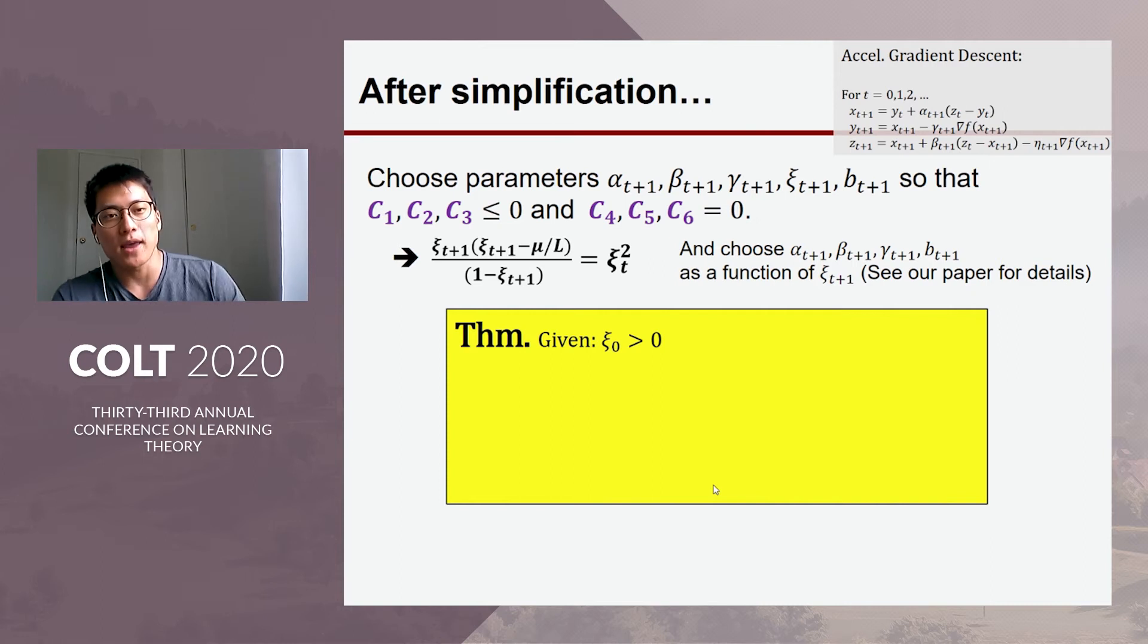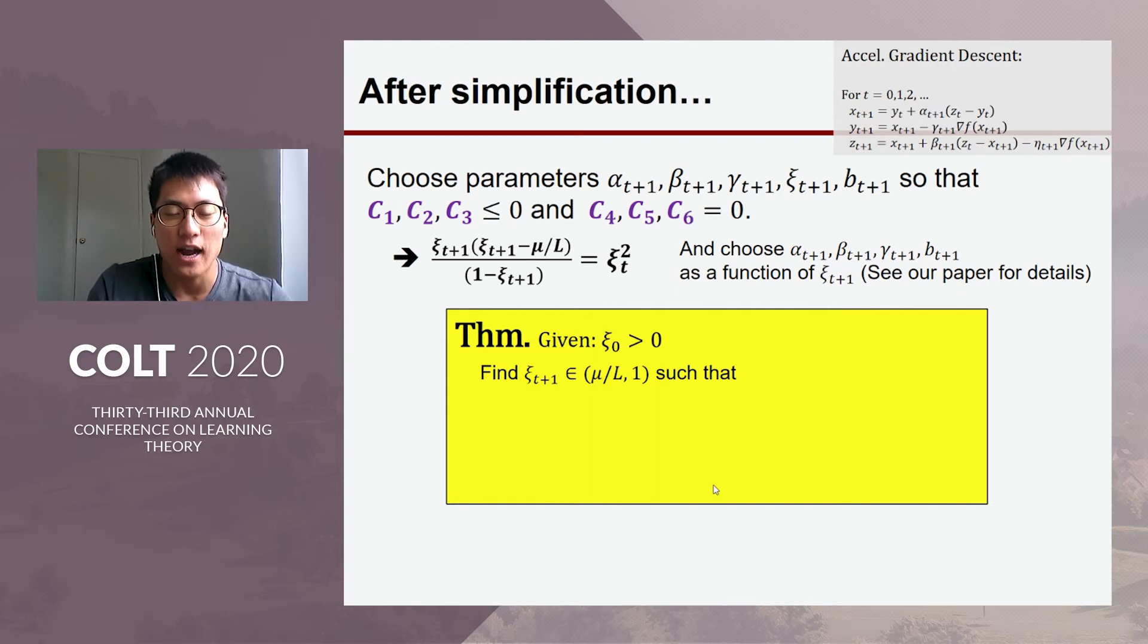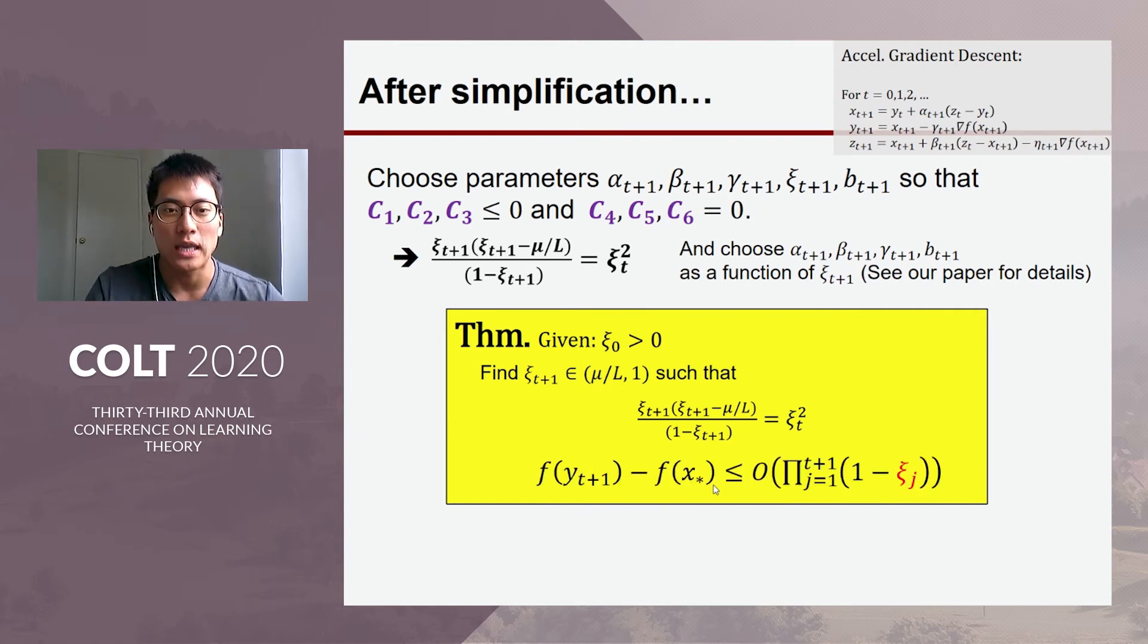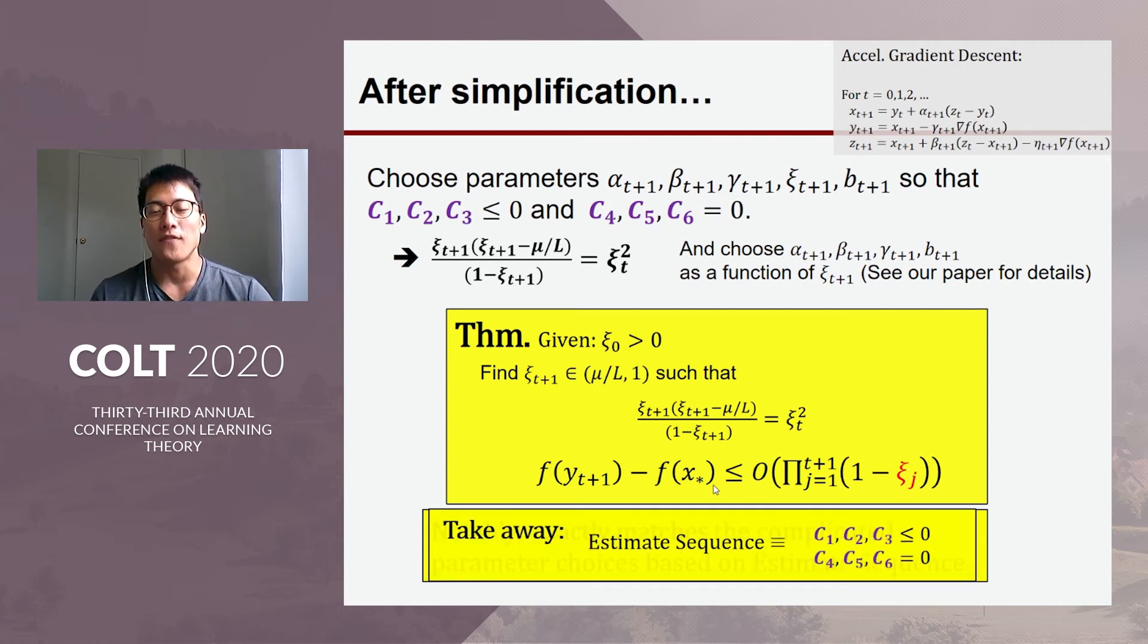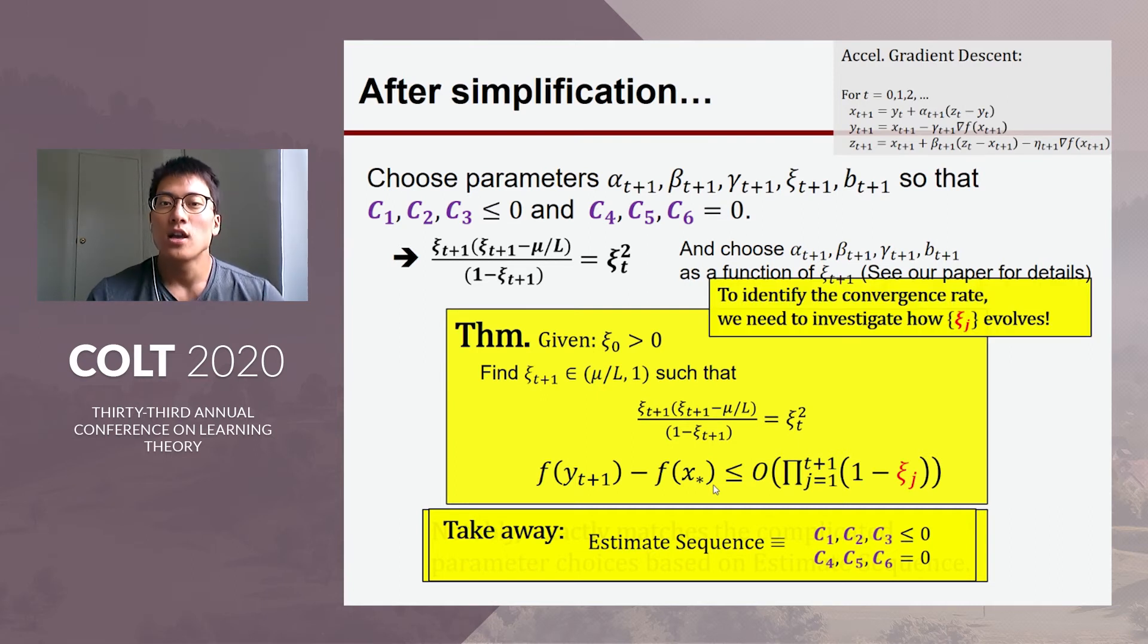So, in particular, it determines c as per this non-linear recursive relation and based on this c_{t+1}, one can completely determine other parameters α, β, γ, and b. And for details, please see our paper. So, based on this, we get this following main theorem. So, given initial c, we choose the next c for the next iteration based off this non-linear recursive relation and then choose the parameters accordingly, we get this linear convergence rate that's product of one minus c. Notably, this complicated parameter choice exactly matches that of Nesterov, from Nesterov's textbook. So, main takeaway is that Nesterov's estimate sequence technique, which is hard to understand, is basically choosing parameters according to this naive strategy.